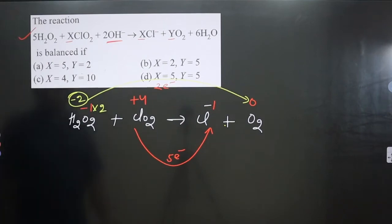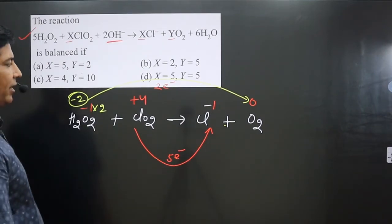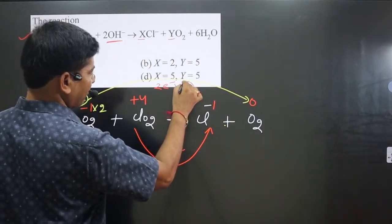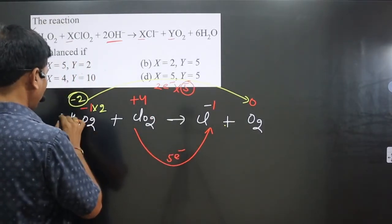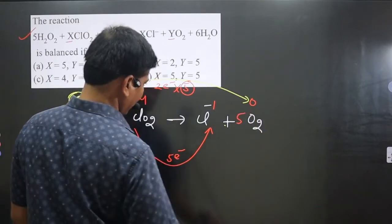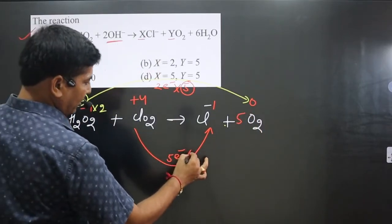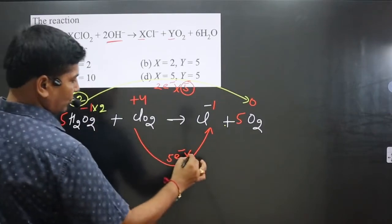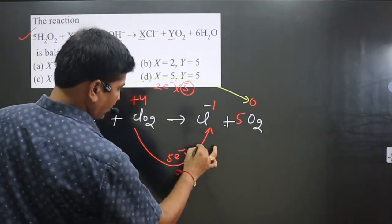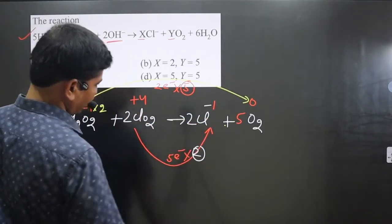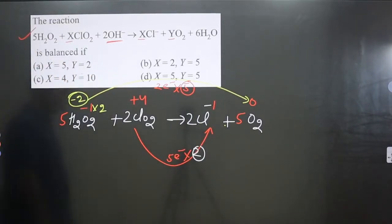To balance the electrons in both half-equations, we criss-cross the values. Multiply by 5: the coefficient 5 comes here and 5 comes here. Multiply by 2: the coefficient 2 comes here and 2 comes here as well. The charge is now balanced.